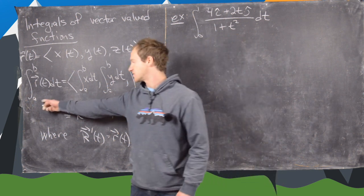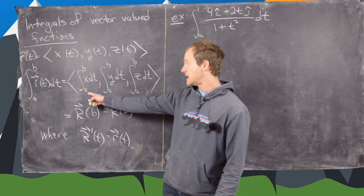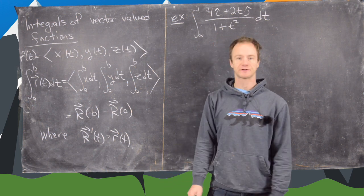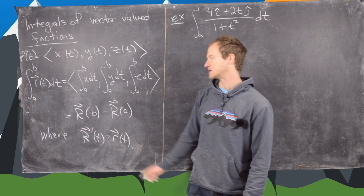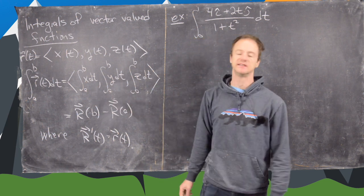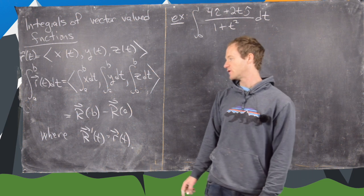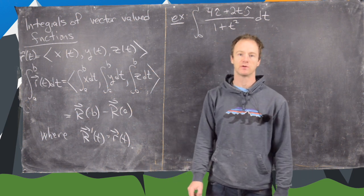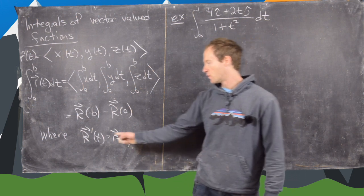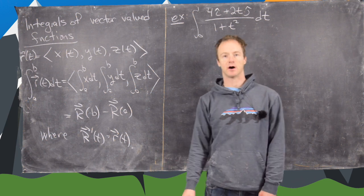We define the integral from a to b of this vector-valued function r to be a new vector whose components are the integrals from a to b of the component functions. So we've got integral a to b of x dt, y dt, and z dt. And we have an FTC for vector-valued functions, and this happens to be equal to capital R of b minus capital R of a, where the derivative of capital R is little r.